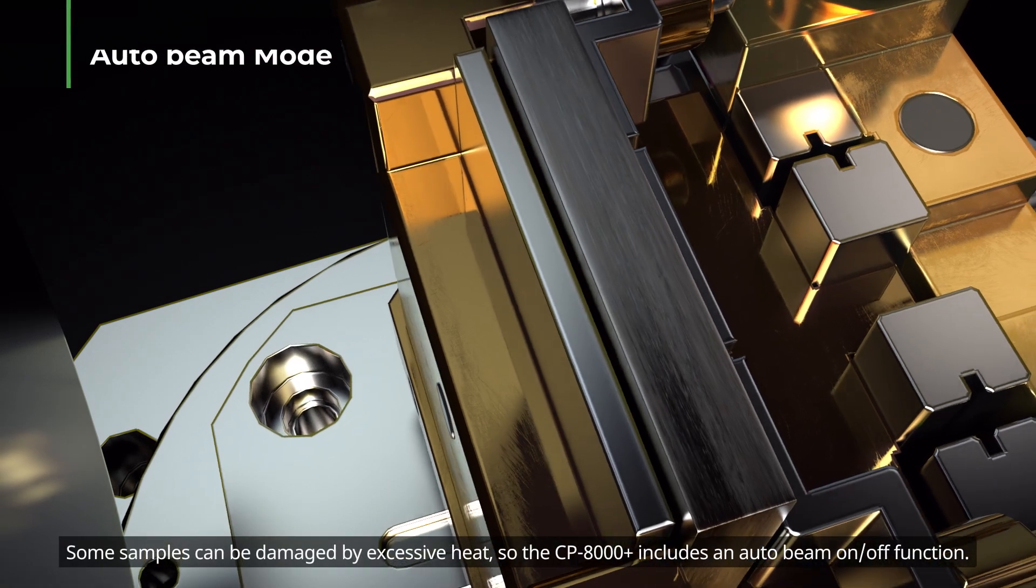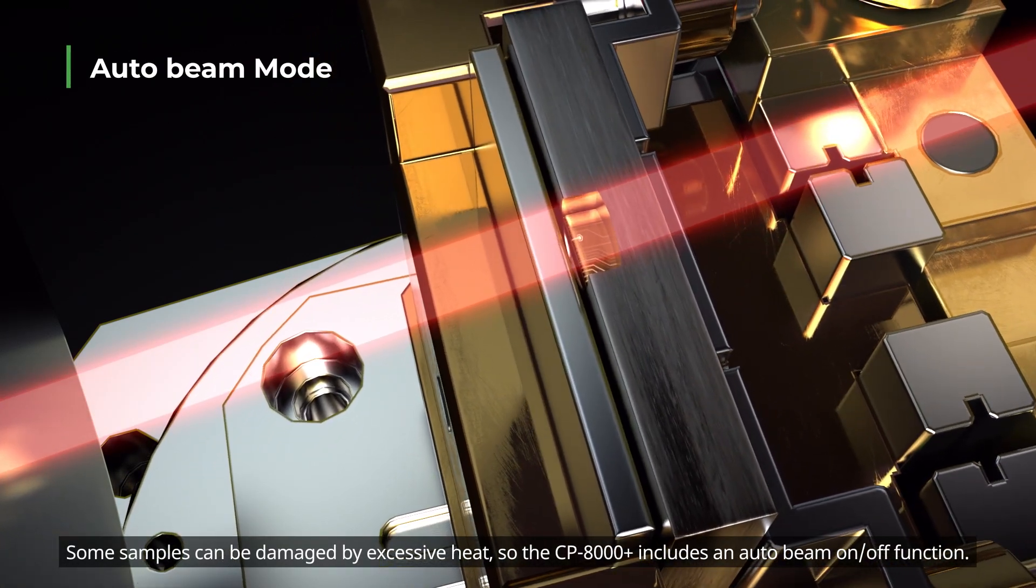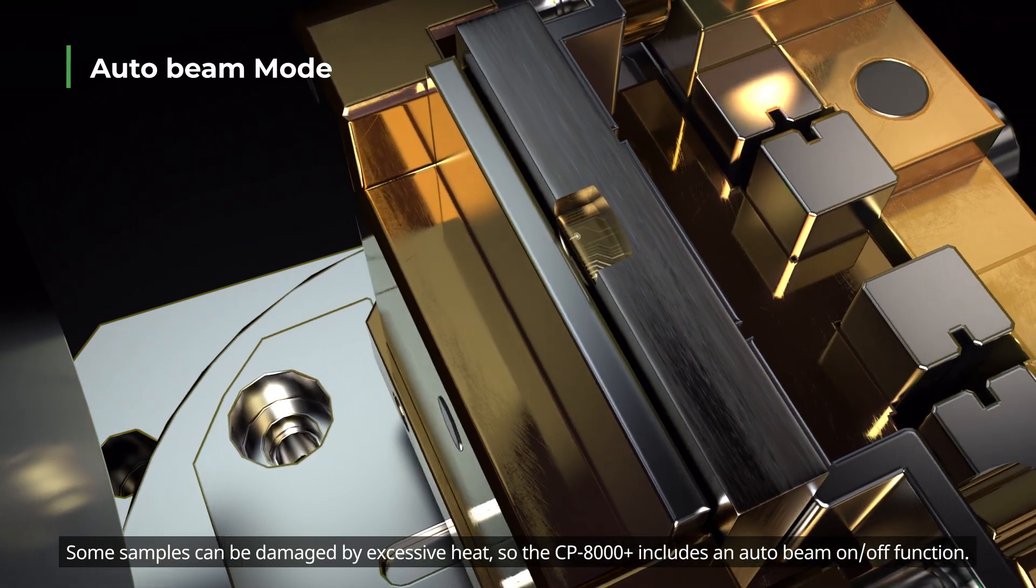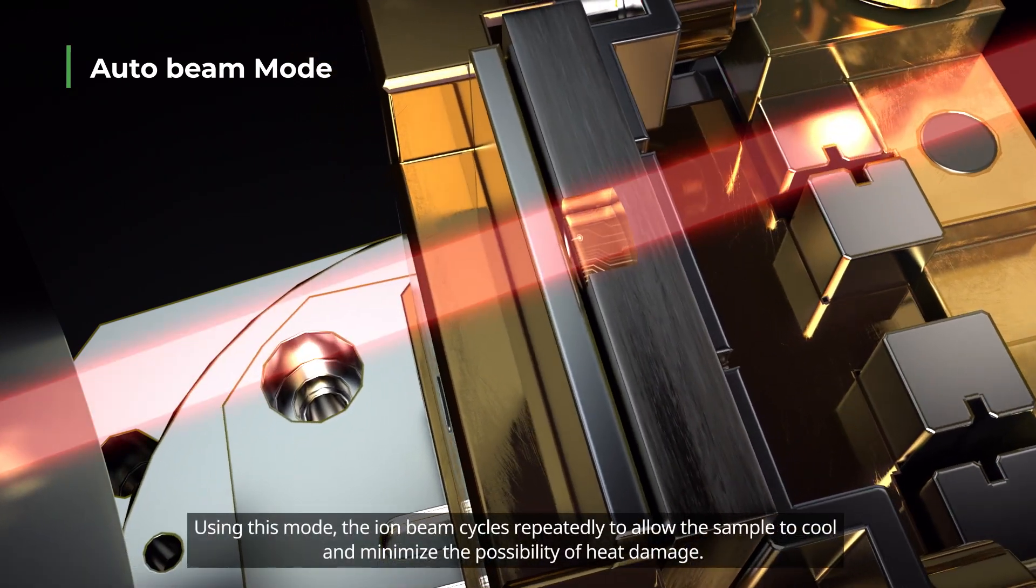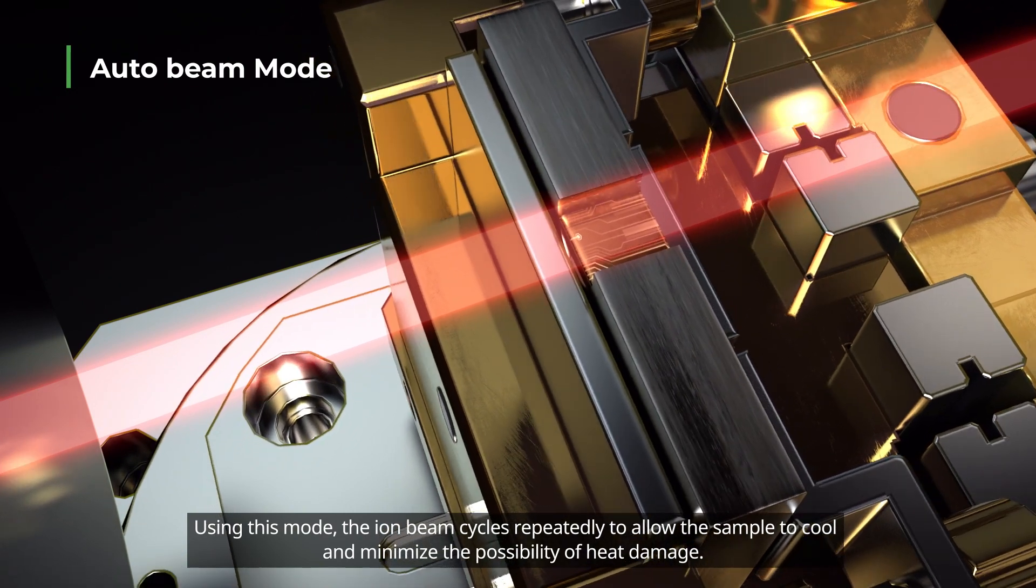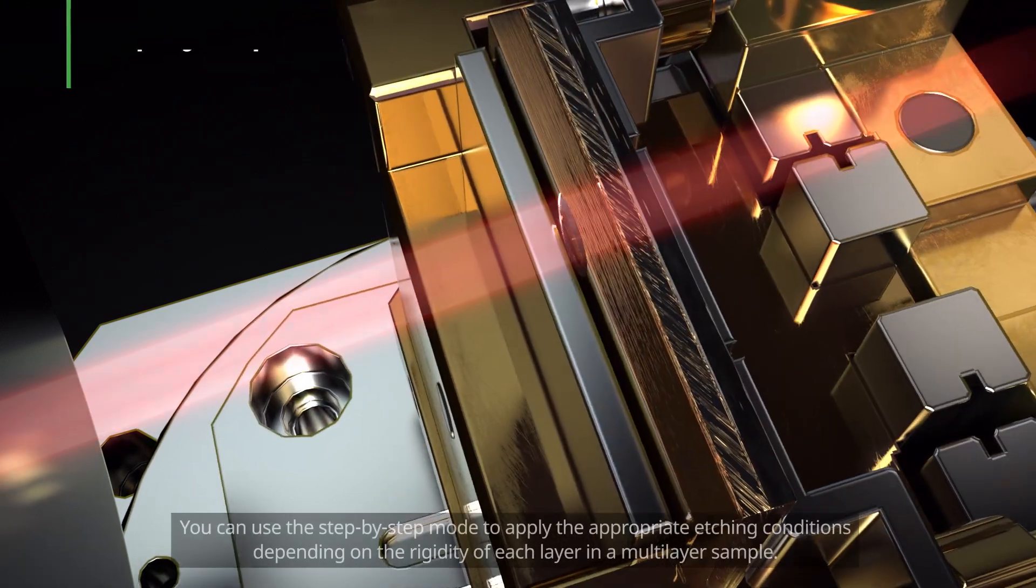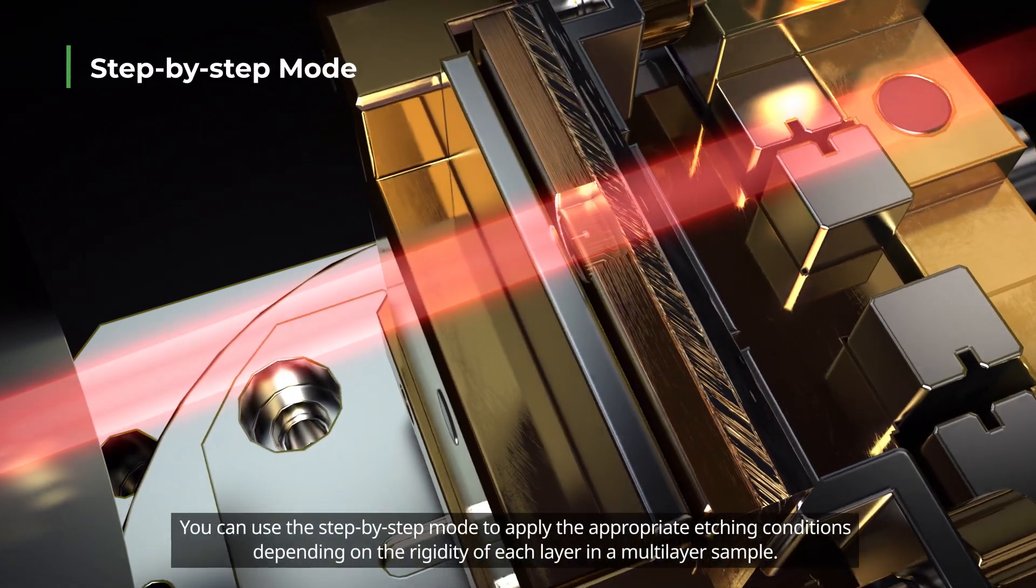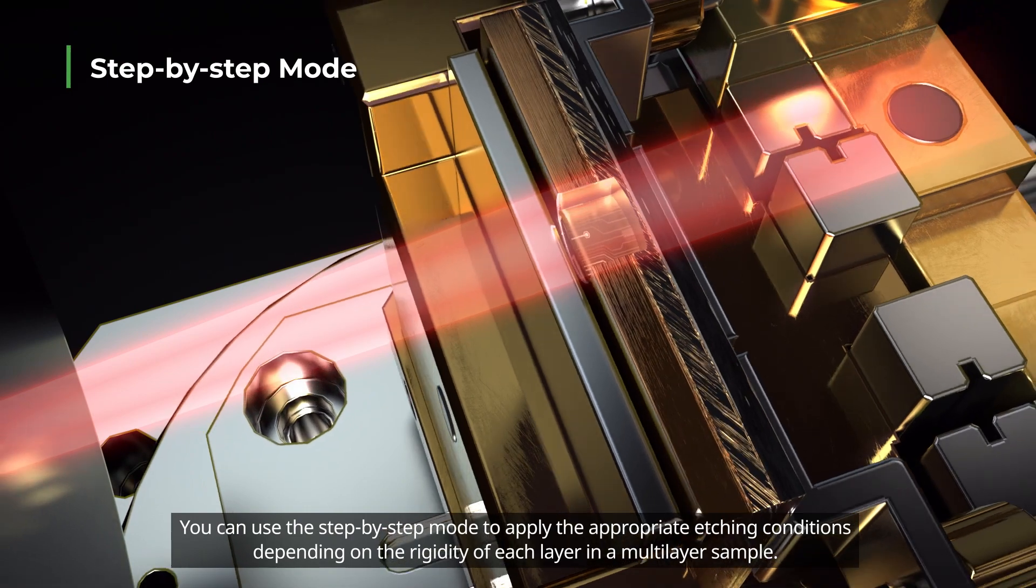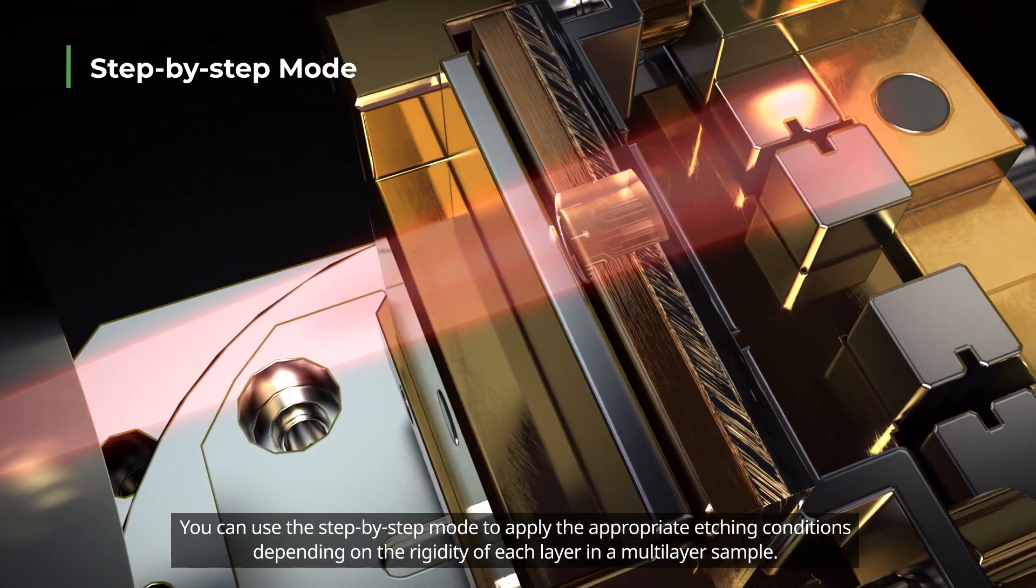Some samples can be damaged by excessive heat, so the CP8000PLUS includes an auto beam on-off function. Using this mode, the ion beam cycles repeatedly to allow the sample to cool and minimize the possibility of heat damage. You can use the step-by-step mode to apply the appropriate etching conditions depending on the rigidity of each layer in a multi-layer sample.